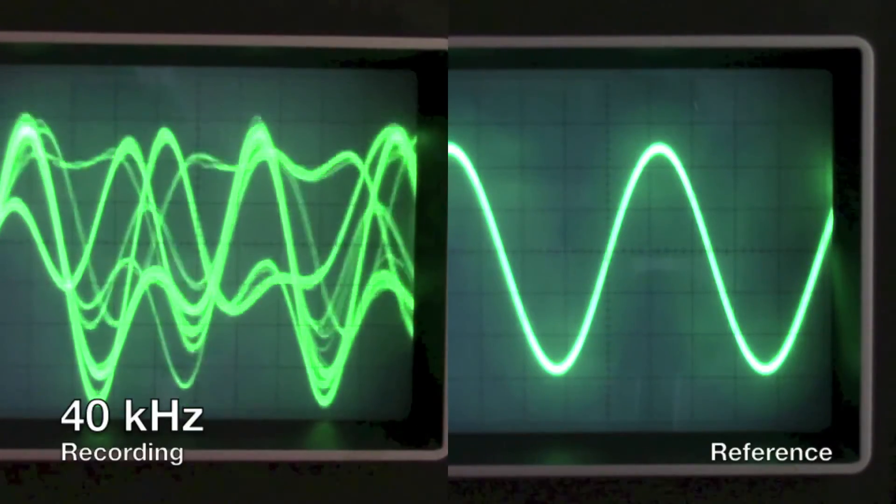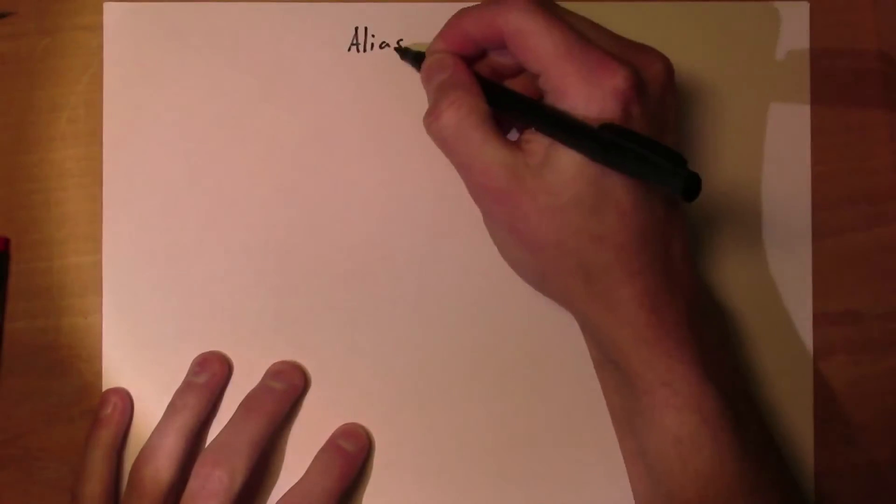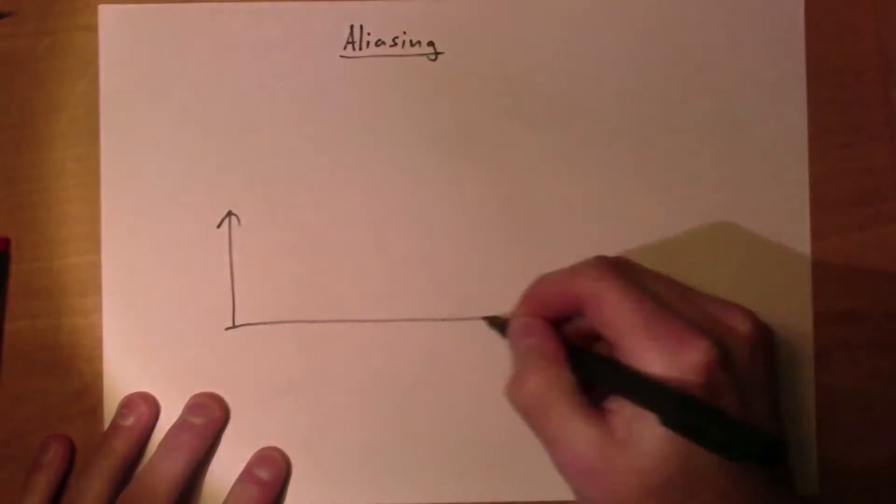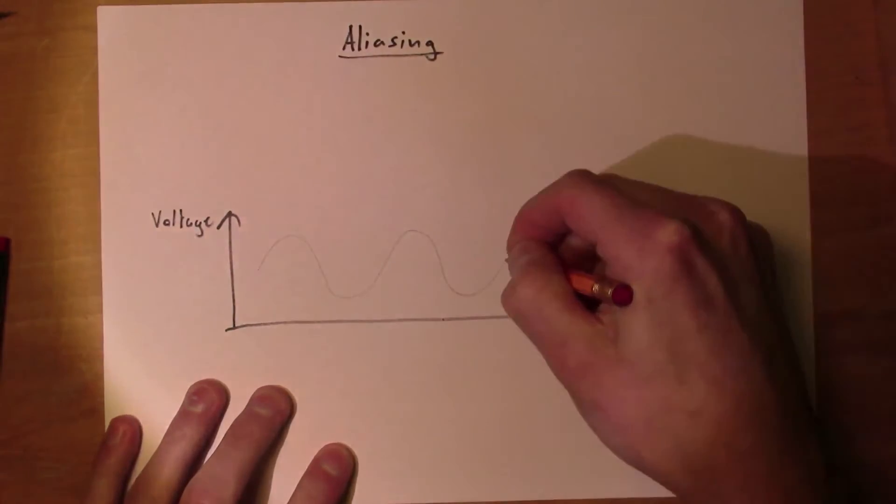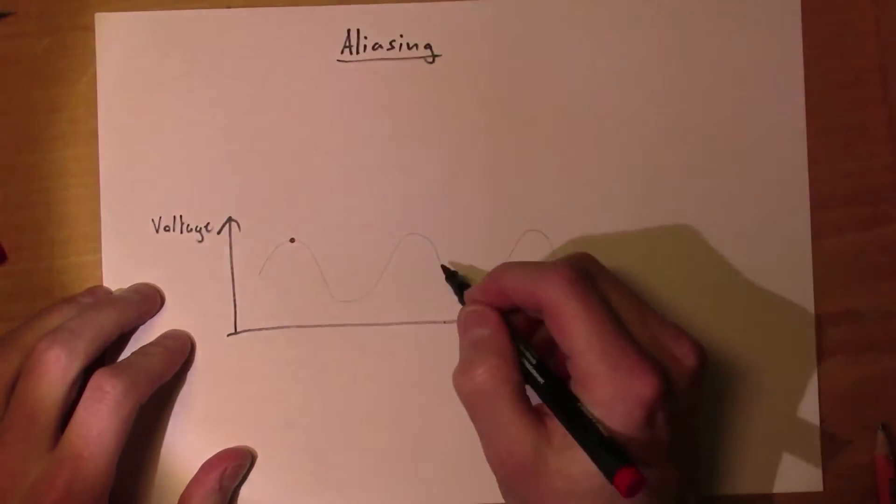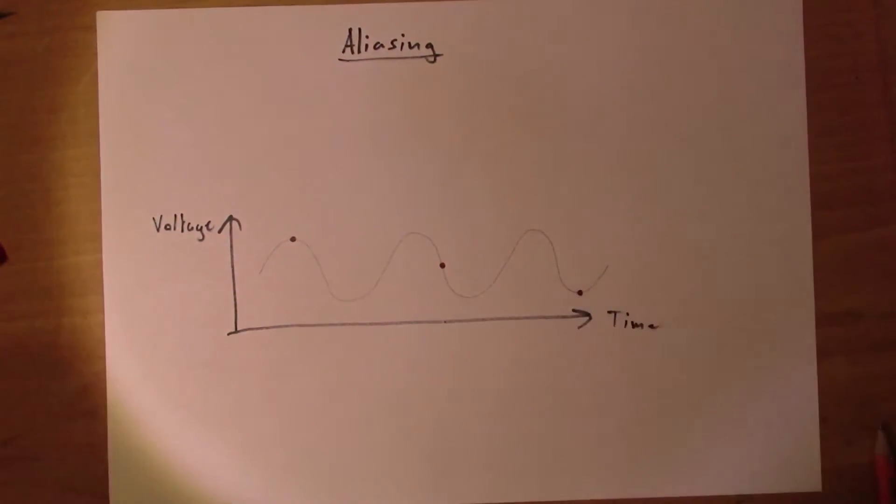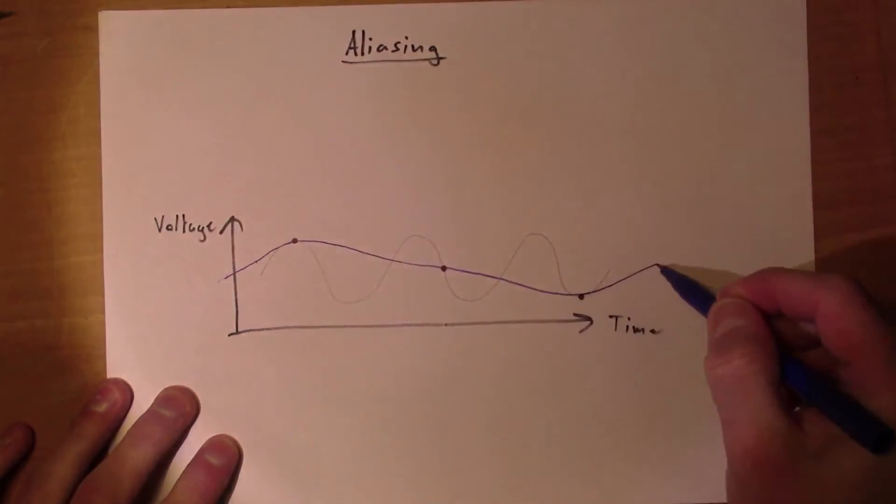This distortion is due to severe aliasing. Aliasing occurs when the recorder tries to record a signal with a higher frequency than the Nyquist frequency. Since the recorder cannot record anything above the Nyquist frequency, it thinks that it recorded something below the Nyquist frequency, and thereby displays the wrong signal when trying to recreate it.